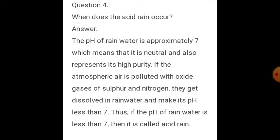Question four: When does acid rain occur? The pH of rain water is approximately 7, which means it is neutral and represents high purity. If the atmospheric air is polluted with oxide gases of sulfur and nitrogen, they get dissolved in rain water and make its pH less than 7. Thus, if the pH of the rain water is less than 7, it is called acid rain.